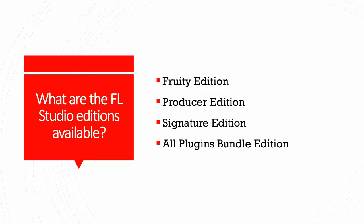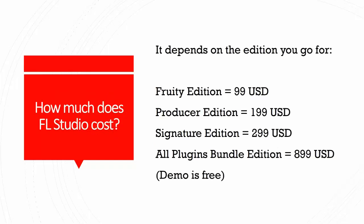The Fruity edition is for people who just want to make quick sounds and quick tracks. The Producer edition is for those who want to make more advanced tracks — you can record, use MIDI, and so on. The Signature edition is for those who want even more plugins. Power users would go for the All Plugins Bundle edition, which includes everything Image-Line offers as stock plugins.